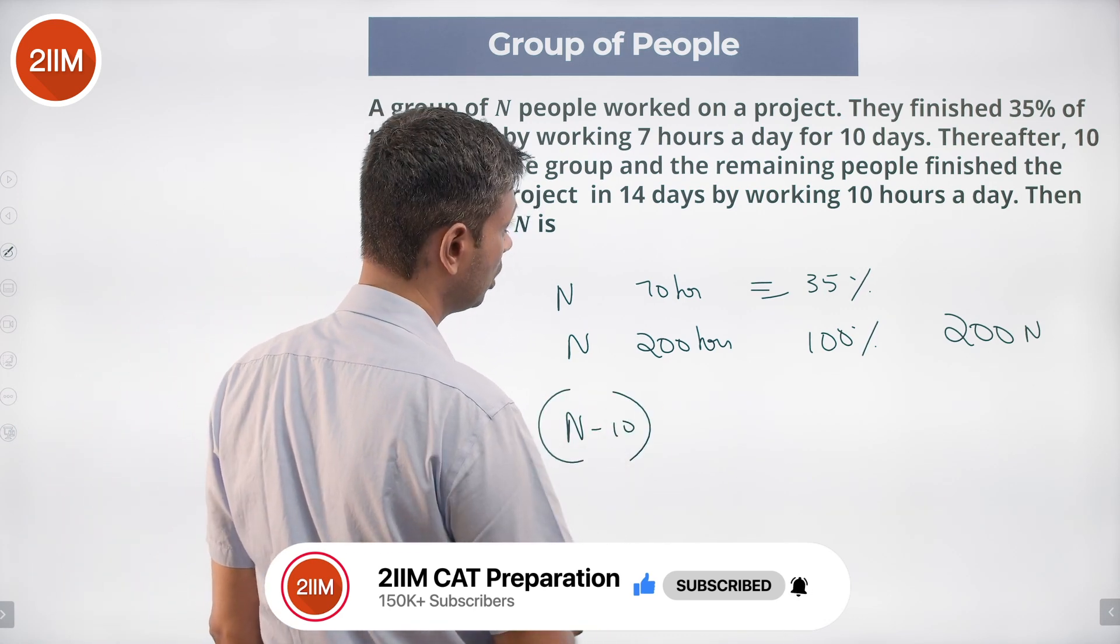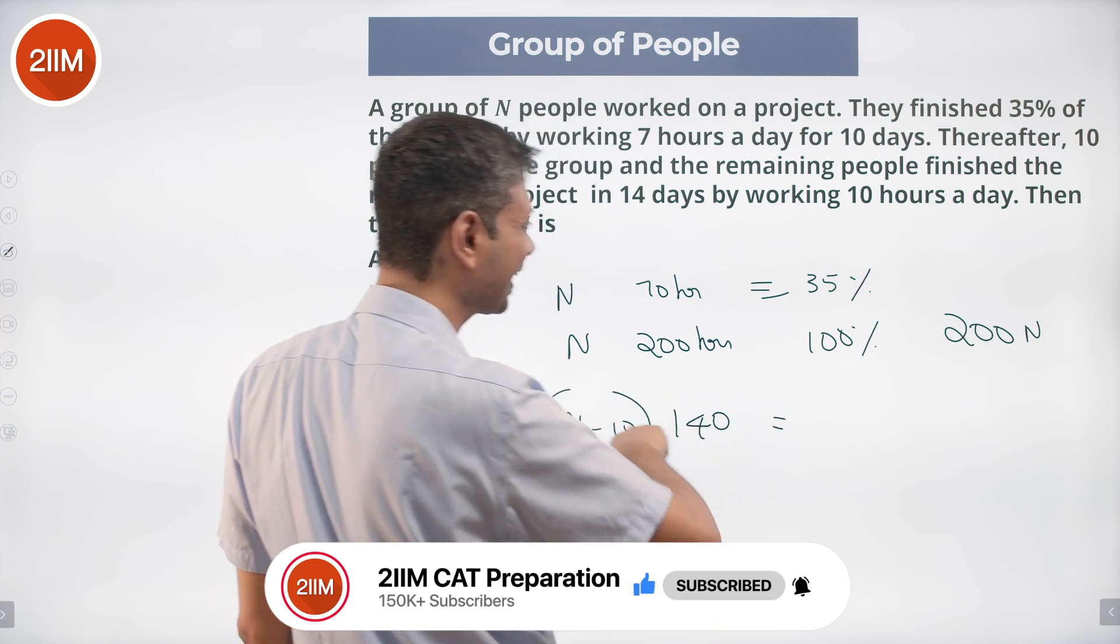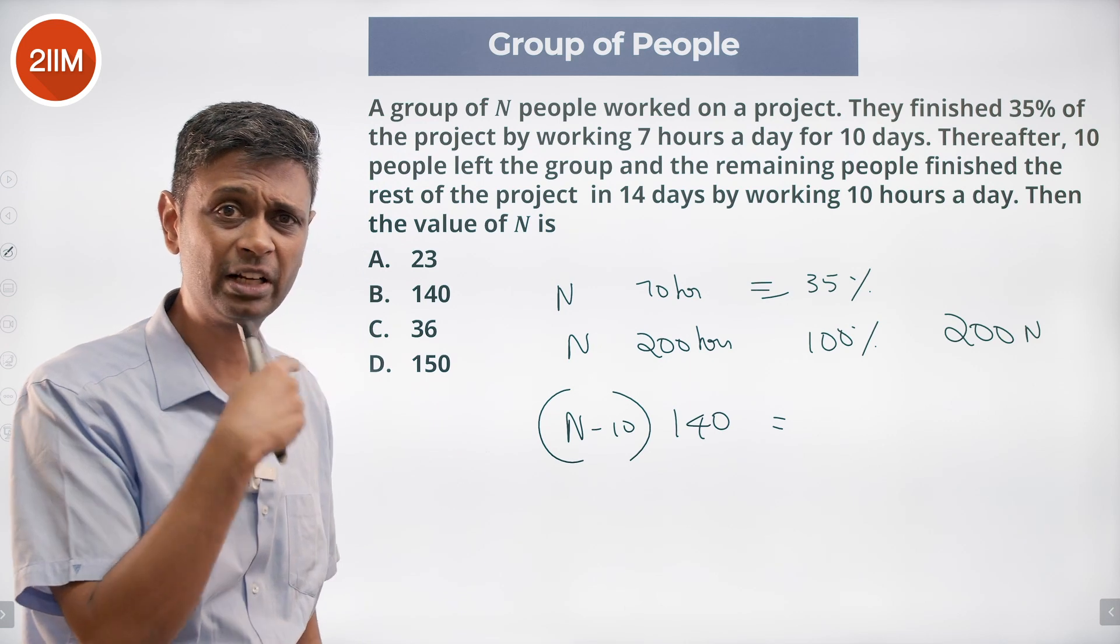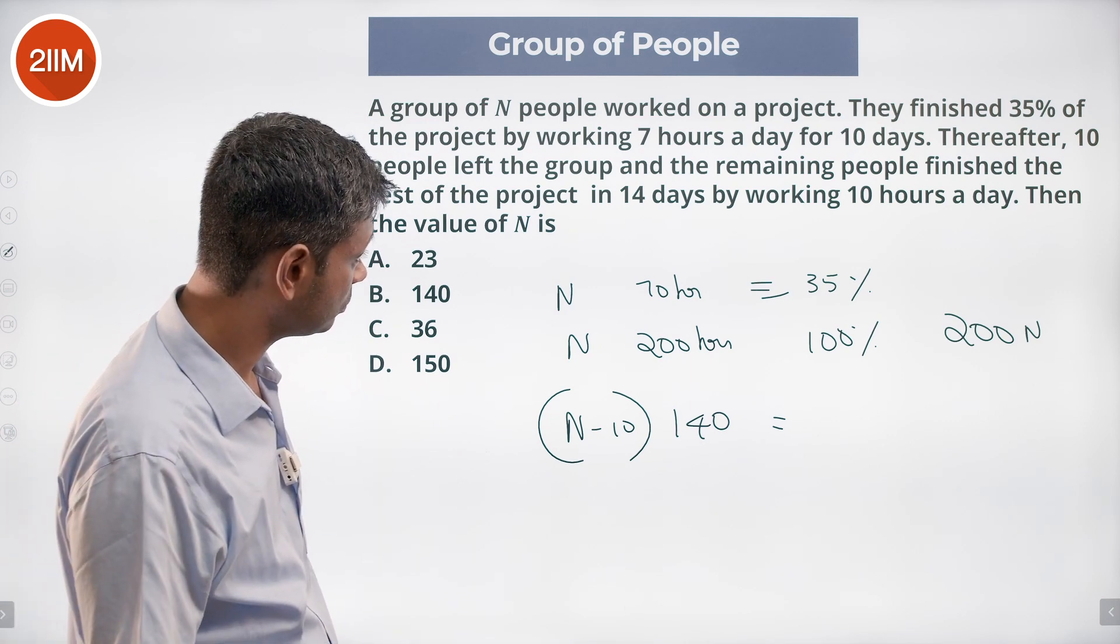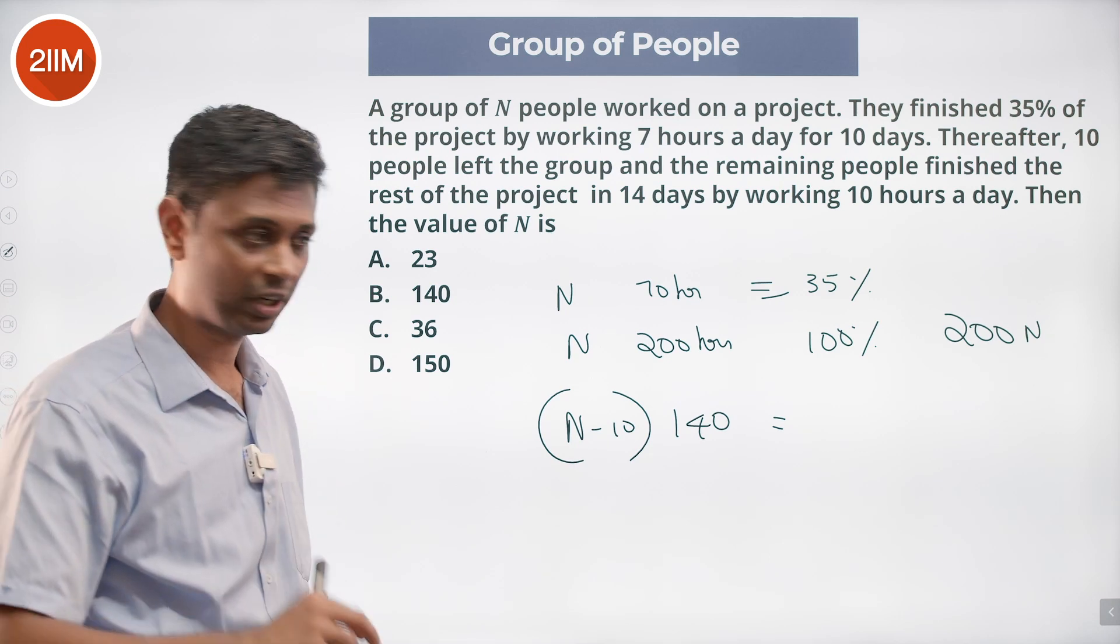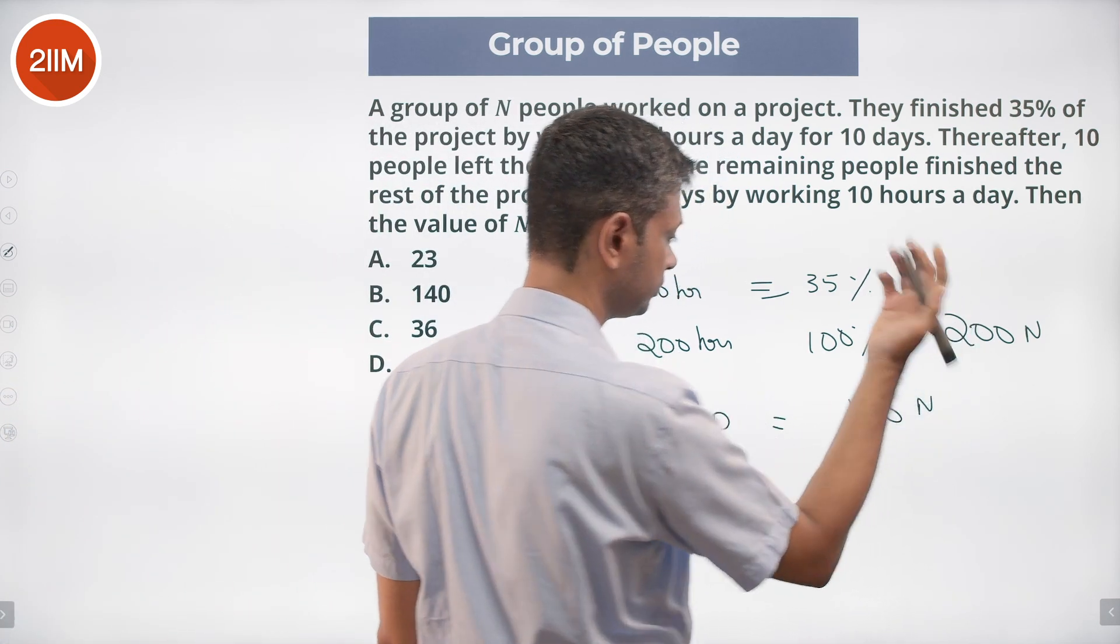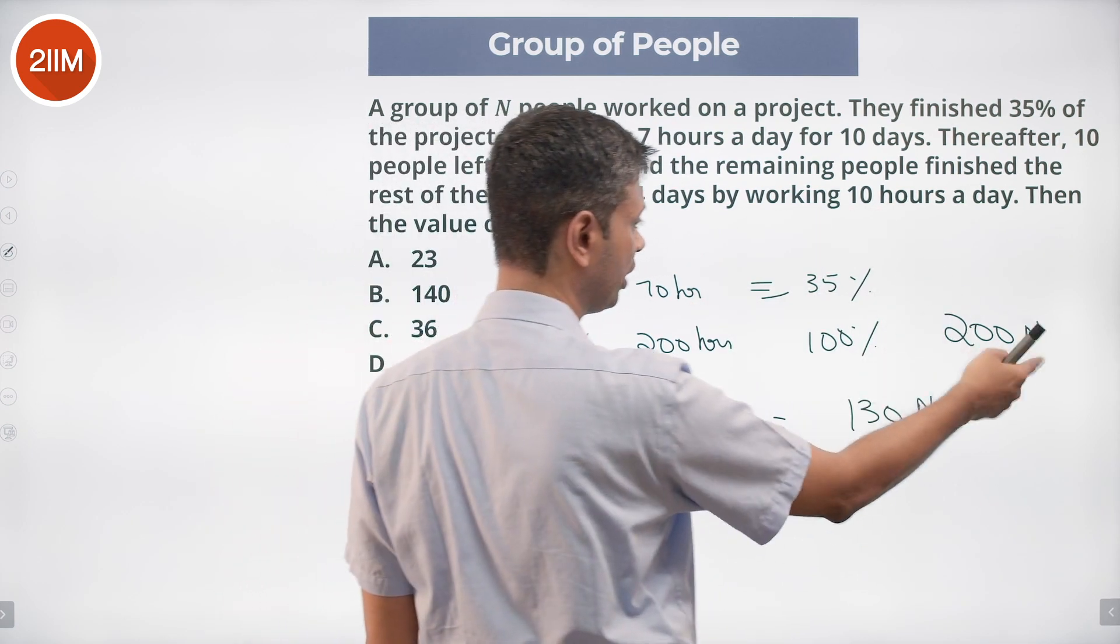70N had been completed. Total task is 200N. The remaining task required to do is 130N. What is this 130N? It's 200N minus 70N.